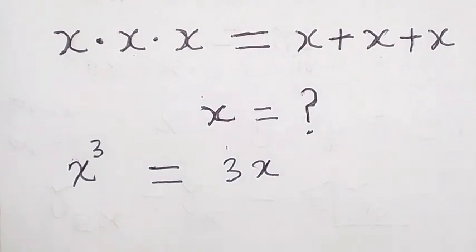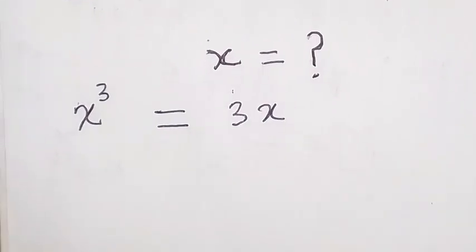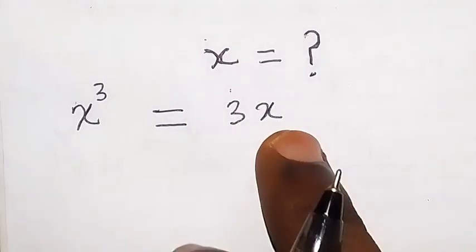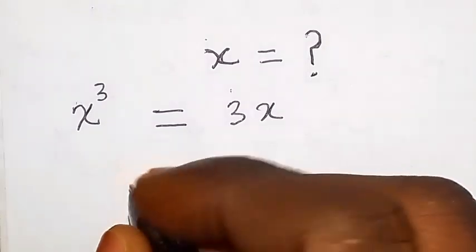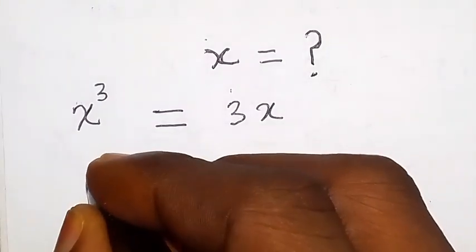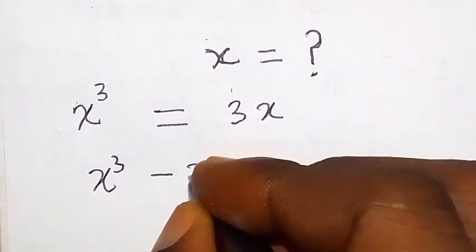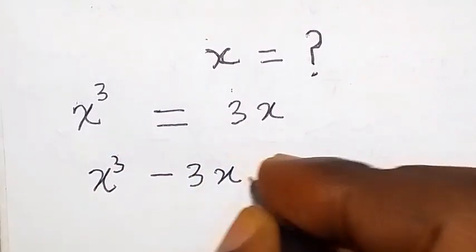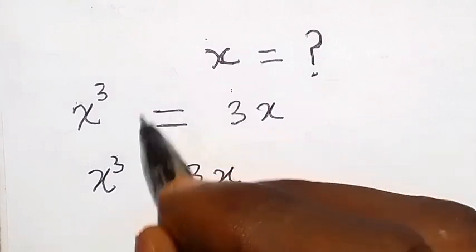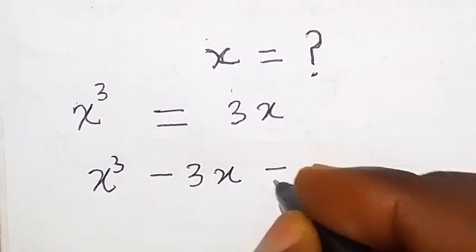And when we look at this, we can bring this 3x to this side. And that will give us x cube minus 3x now. Because it's plus on this side, when it comes to this side, it becomes minus, then equals to 0.